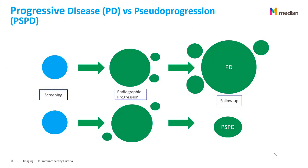This is a schema of pseudo-progression. In the upper schema, at screening, you have a tumor. Then we see a radiographic progression of that tumor at the second time point with presence of two new lesions. The tumor and new lesions increase in size at the third time point with another new lesion – this is a progressive disease case. In the lower schema, after the second time point, the tumor shrinks as seen in the third time point. Therefore, this case is a case of pseudo-progression where the tumor expanded before reducing.